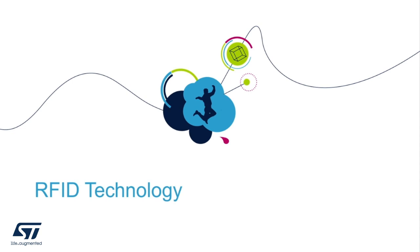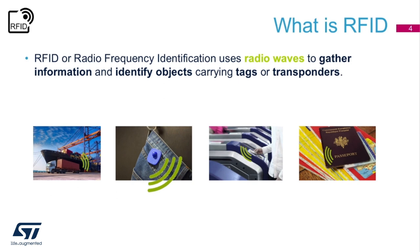RFID, or radio frequency identification, uses electronic radio waves to gather information stored on a tag or transponder attached to an object. RFID technology actually started in the 1940s. A specific example used in World War II was the IFF transponder, routinely used by the Allies and Germany to identify aircraft as friend or foe.